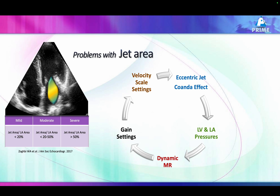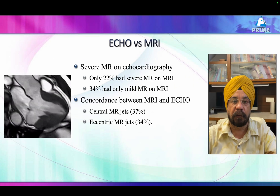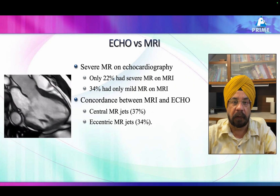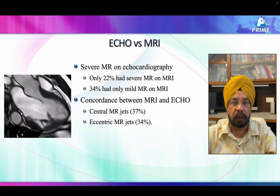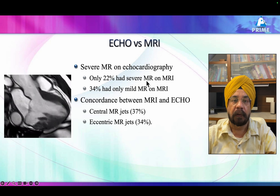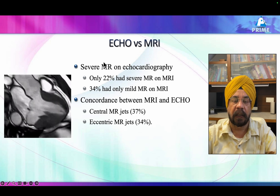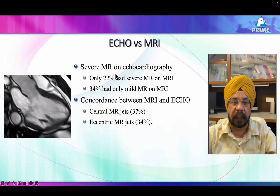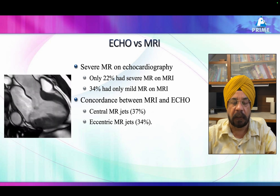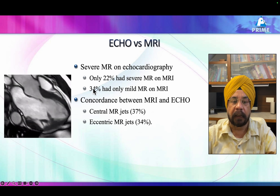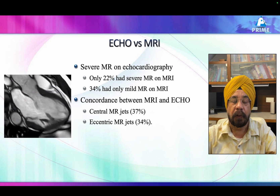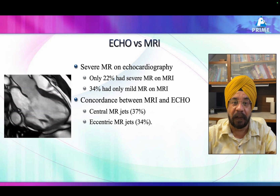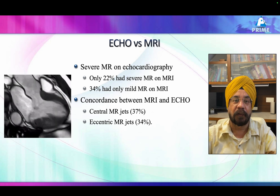It also depends upon gain settings and the Nyquist limit. The ideal Nyquist limit we suggest is between 40 to 50 centimeters per second. There are so many fallacies in making an assessment of mitral regurgitation. A study comparing echocardiography with CMR — which is the gold standard — found that of patients where we diagnosed severe MR based on jet area or jet-to-LA area alone, only 22% actually turned out to be severe. And 30% had only mild mitral regurgitation.